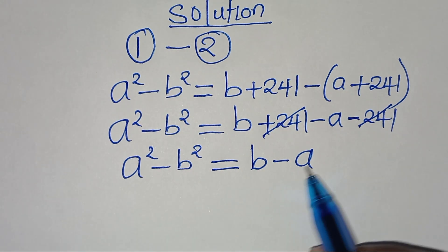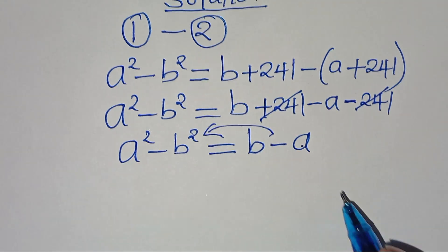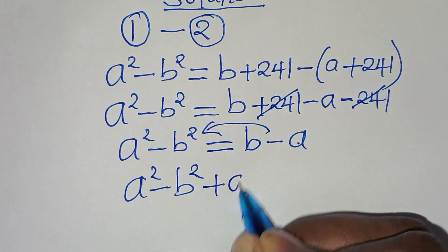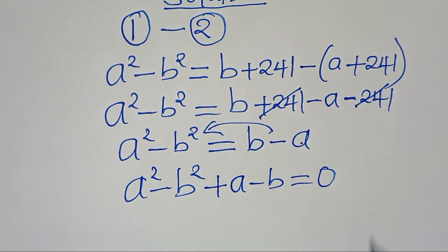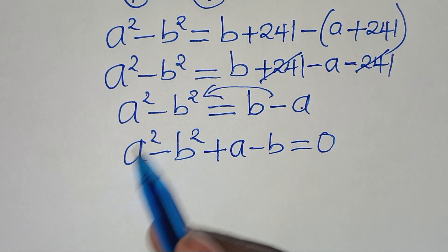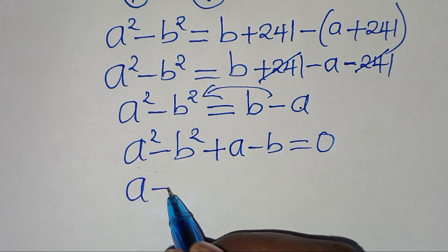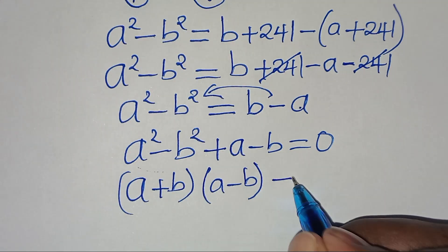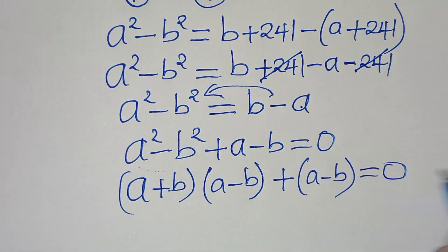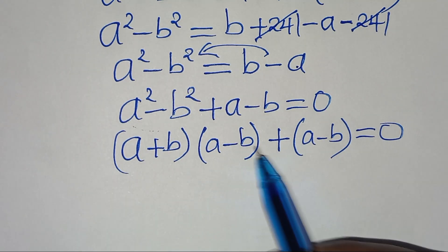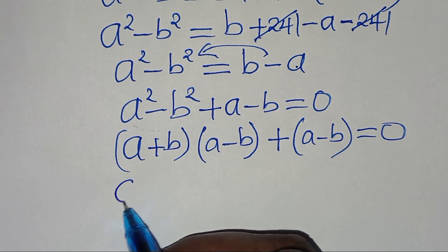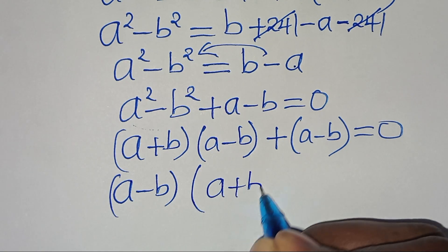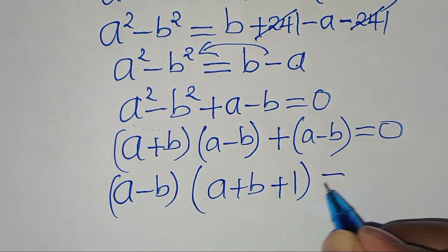Rearranging, we bring b minus a to the left-hand side, giving a squared minus b squared plus a minus b equals 0. Now a squared minus b squared is a difference of two perfect squares, which factors as (a + b)(a - b), plus (a - b) equals 0.